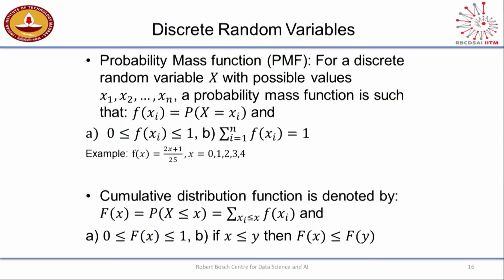So now let's get into a little bit of the math. We spoke about this thing called the probability mass function. That's used for a discrete random variable X with possible values x1, x2, x3. This is going to be a recurring nomenclature: you represent a random variable with a capital letter, and you use small letters to represent the outcomes that the random variable can take on.